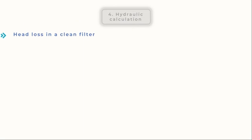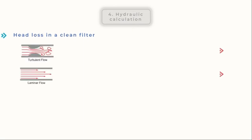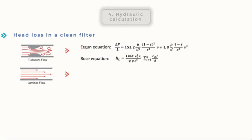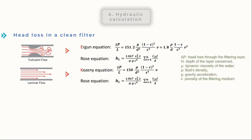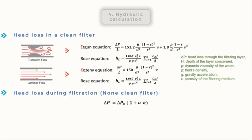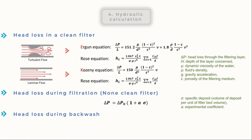Let's take a look at how to determine a filter's head loss. The type of flow affects how clean bed head loss is calculated. Ergun or Rose equations for turbulent flow, and Kozeny or Rose equations for laminar flow, can be used to calculate the head loss or pressure drop when clean water passes through a clean bed filter. However, when a liquid containing suspended solids permeates the medium and the suspended solids are gradually trapped, this affects the medium's properties — especially its porosity, which decreases, and its pressure drop, which empirically increases according to a specific law, where sigma is the volume of deposit per unit of filter bed volume and is an experimental coefficient. During backwash, when water moves through the bed from bottom to top, filter grains are raised, causing sand bed expansion. The head loss through an expanded bed is equal to the buoyant weight of the dissolved particles.